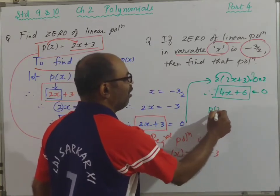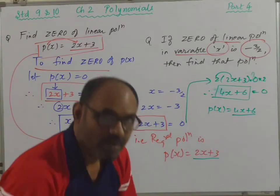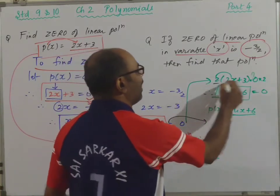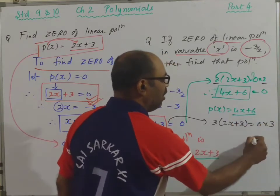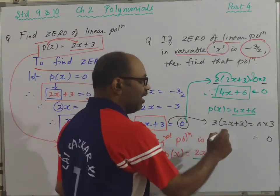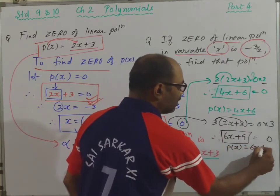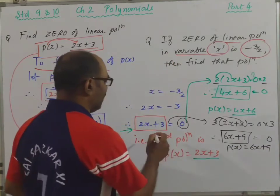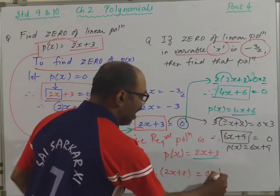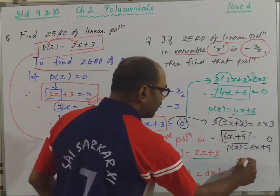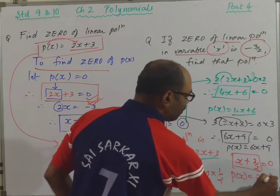This gives a new polynomial: p(x) = 4x + 6. That is the second polynomial. Instead of multiplying by 2, if I multiply both sides by 3: 3(2x + 3) = 0, giving 6x + 9 = 0. So polynomial p(x) = 6x + 9. If I multiply by one-half on both sides: (1/2)(2x + 3) = 0, the 2 cancels, giving x + 3/2 = 0. So p(x) = x + 3/2.